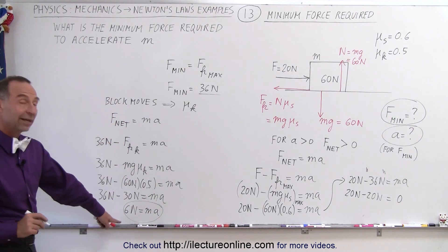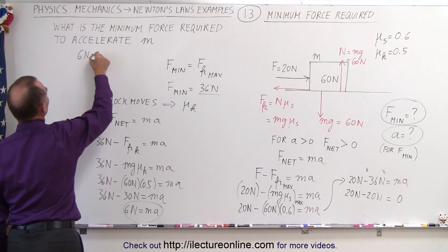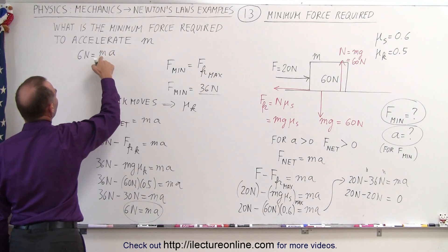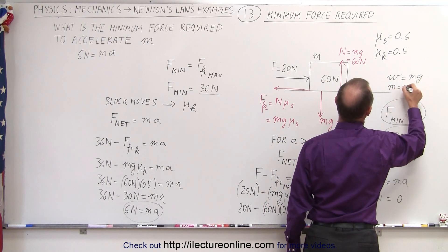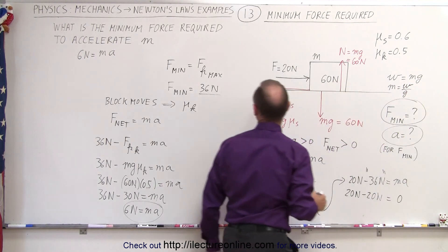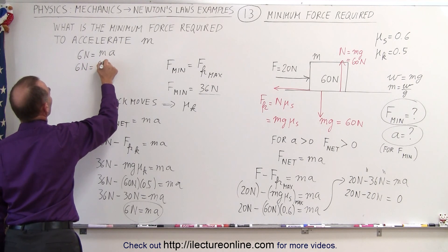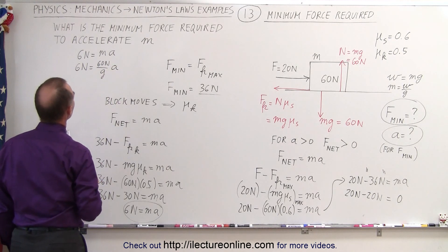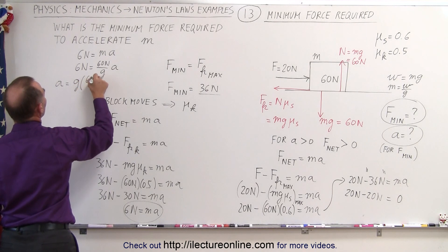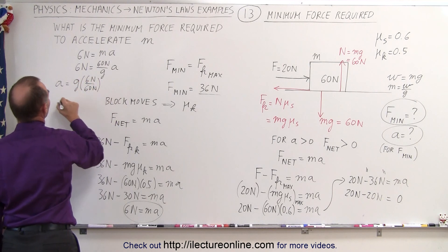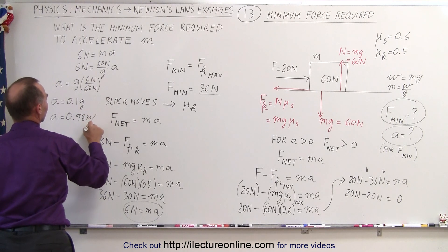So what is the acceleration now? We have a net force of 6 Newtons, so 6 Newtons equals M times acceleration. Instead of M, we write weight divided by g, since weight equals mg means M equals weight/g. So 6 Newtons equals (60 Newtons / g) times a. Therefore a equals g × 6/60, which is 0.1g, or a equals 0.98 meters per second squared.